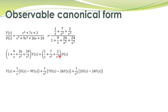Likewise, the term 7/s² multiplied by U(s) and 26/s² multiplied by Y(s) — taking 1/s² common from both gives 7U(s) minus 26Y(s). And the third term, 2/s³ multiplied by U(s) minus 24/s³ multiplied by Y(s), is written similarly. We have simply rearranged this equation into this particular format.